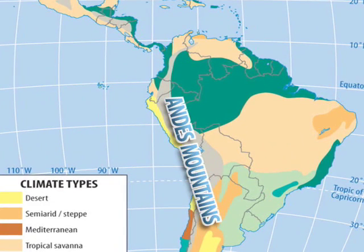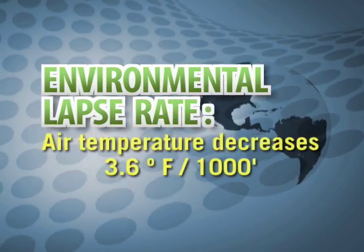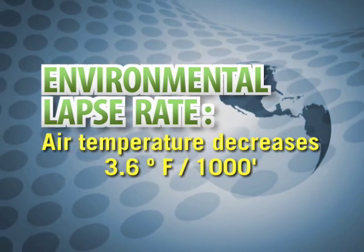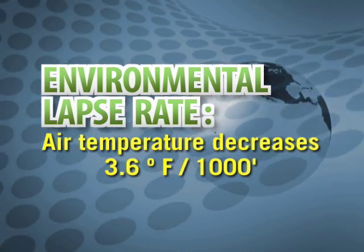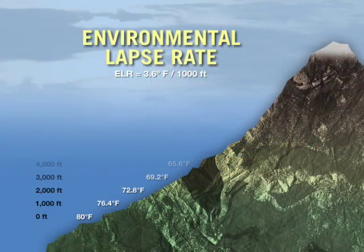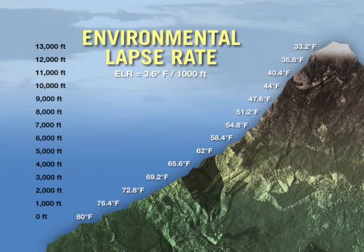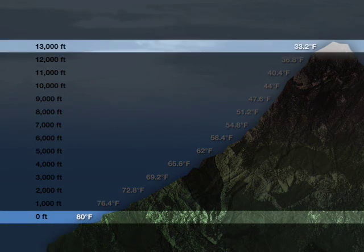However, with the Andes Mountains running along South America's western coast, the climates vary according to elevation, or altitude. In fact, the air temperature decreases on average about 3.6 degrees Fahrenheit per 1,000 feet. Looking at this illustration, notice how temperatures change rapidly as we rise from sea level to 13,000 feet. As a result, drastic changes in elevation associated with the Andes Mountains produce diverse temperatures in very small areas.